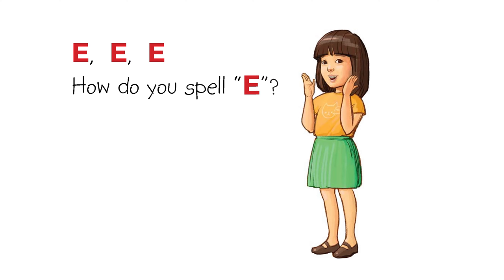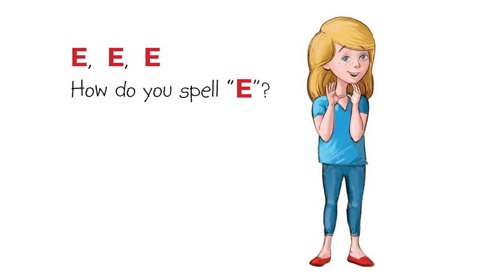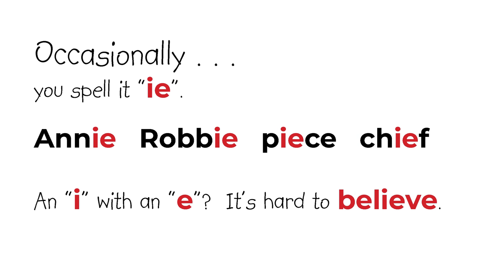Occasionally you use a silent E: peach, these, scene, theme. At the end of the word it can be found, but silent E doesn't make a sound. Ee ee ee, how do you spell 'ee'?